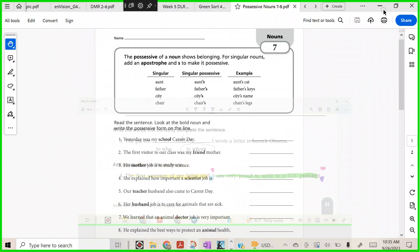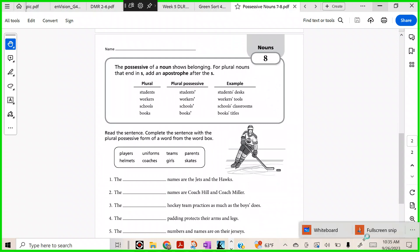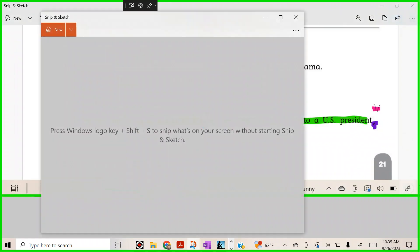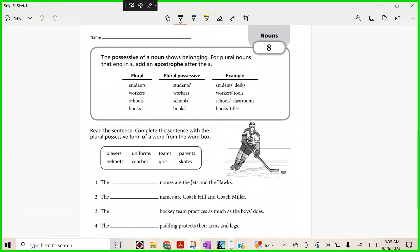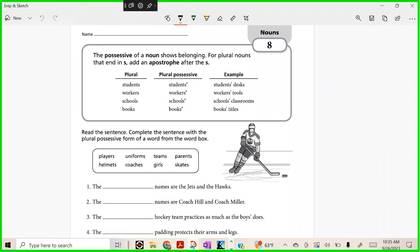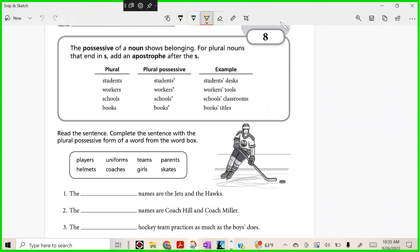Let's take a look at eight. Now we're talking about a possessive noun showing belonging to a group or a plural noun. Are you ready, Noah? We're talking about showing possession to a group of students, a group of workers, multiple schools, and multiple books.